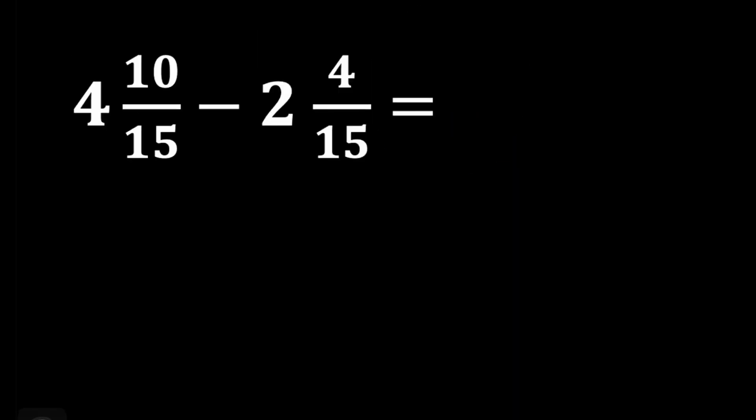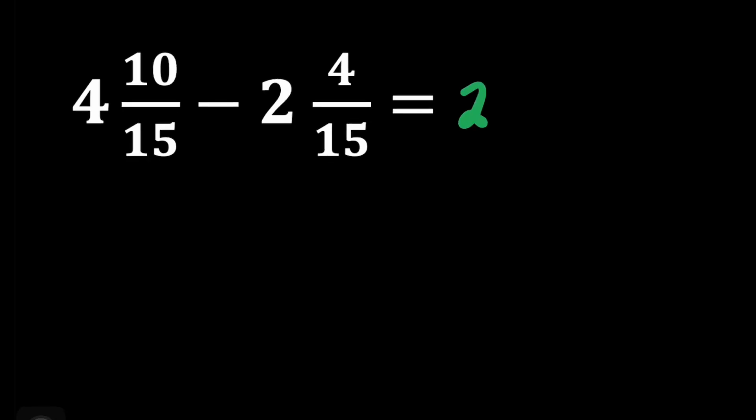We have another one. 4 and 10 fifteens minus 2 and 4 fifteens. This is also easy because we can just subtract our whole number. So that's 4 minus 2, which will give us 2. Next, we'll subtract 4 fifteens from 10 fifteens, and that will give us 6. And copy our denominator of 15.